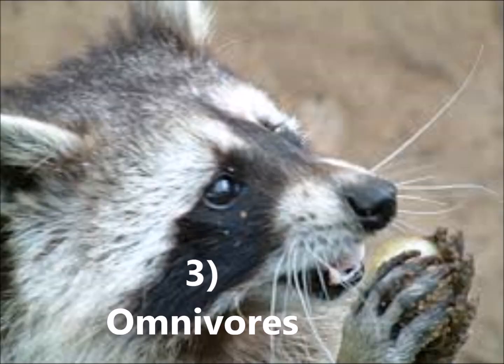Omnivores are a little bit more flexible with their diet — unlike my brother Bobby who only eats chicken fingers. Omnivores eat both plants and animals. Raccoons, skunks, bears, and rats are all examples of omnivores.